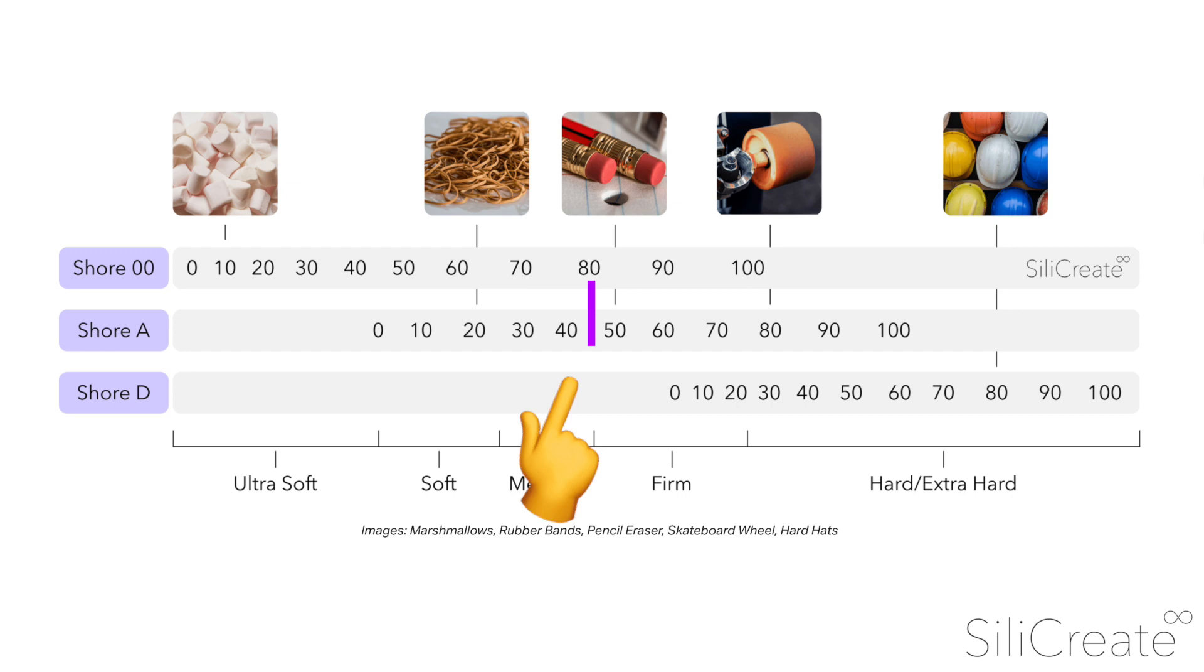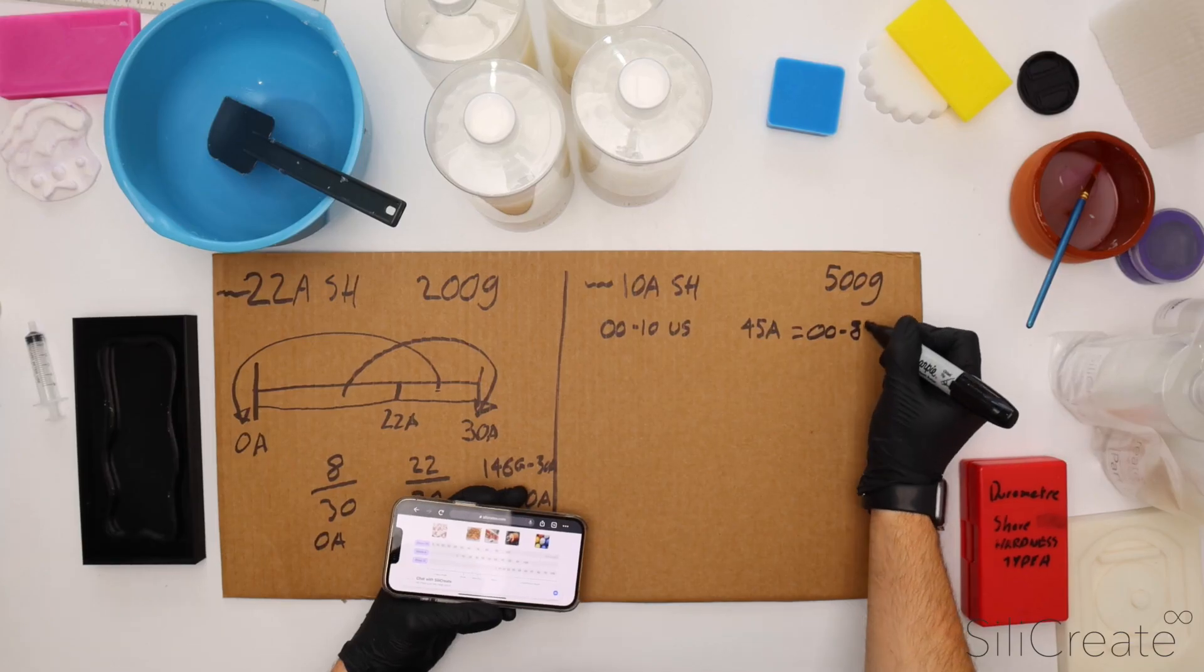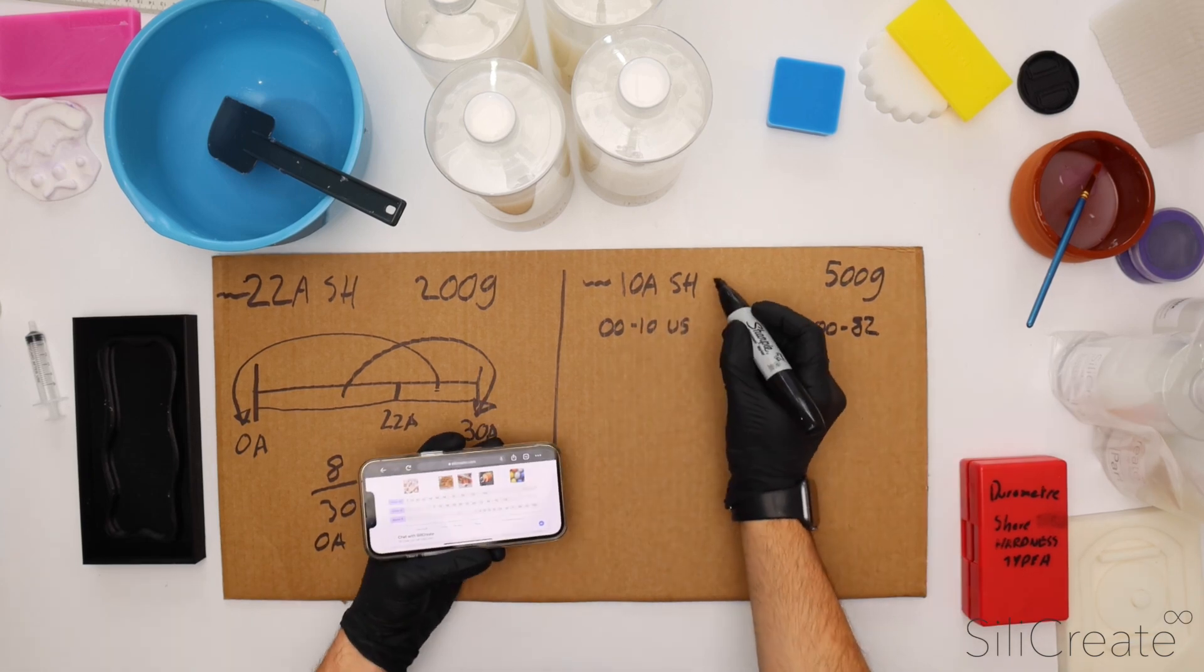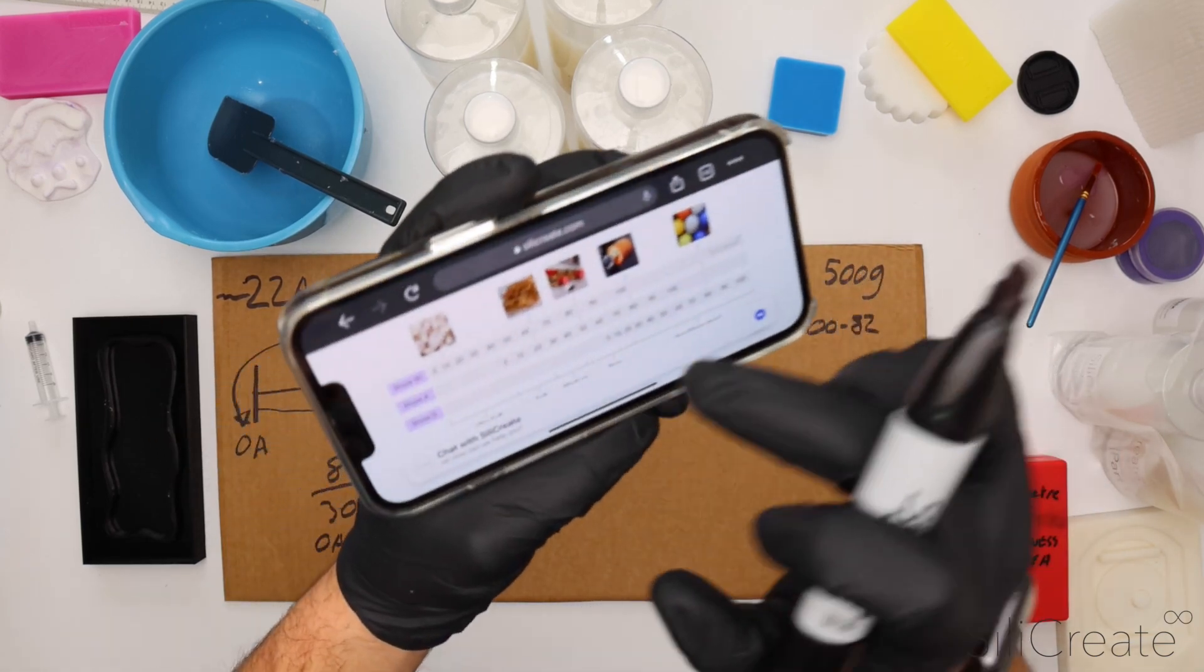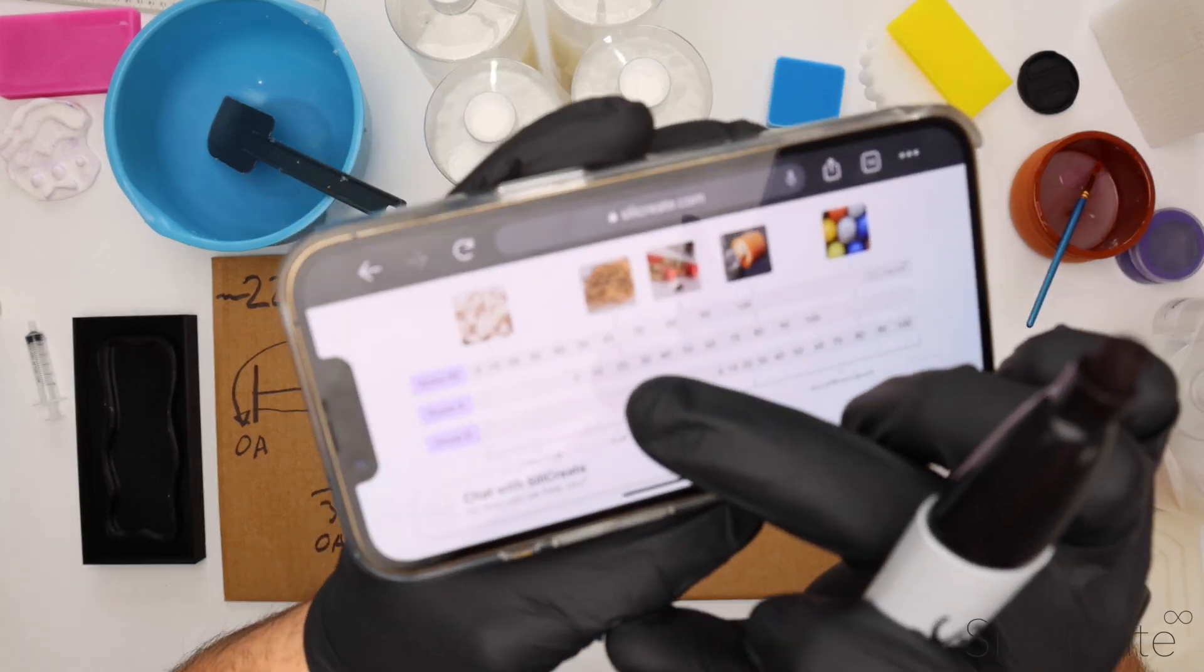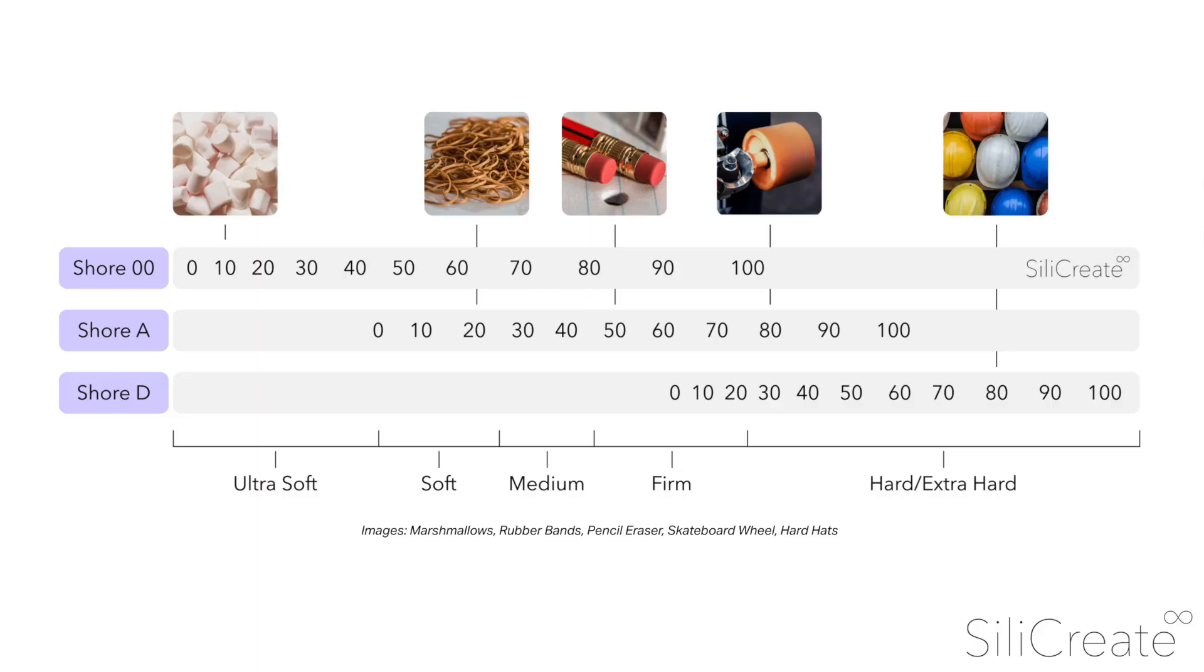So we'll say that this one's about 0080. Let's say 82. And now we should figure out what 10A is in the double zero scale. So 10A lands between 50 and 60.